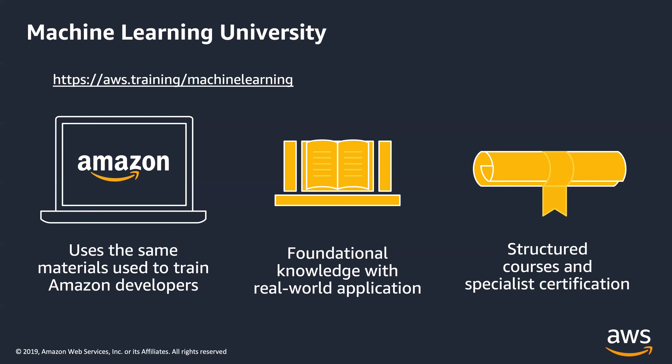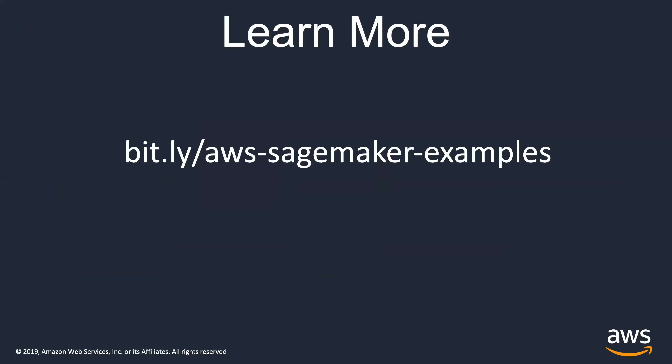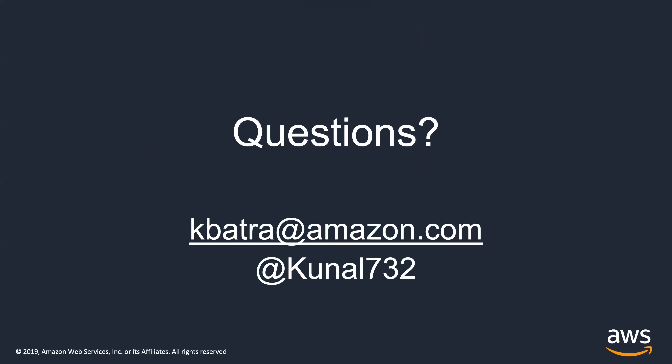So that was a whirlwind tour of machine learning at AWS. If you want to dive deeper or schedule time to chat, feel free to reach out — this is a passion of mine. We have a machine learning university providing 30 digital courses over 45 hours. I also recommend checking out the notebooks and examples on GitHub — you can access them at bit.ly/aws-sagemaker-examples. If you need credits to play around with any of these services, email me at kbatra@amazon.com or reach out on Twitter at Kunal732 — Twitter is by far the best way to get in touch.